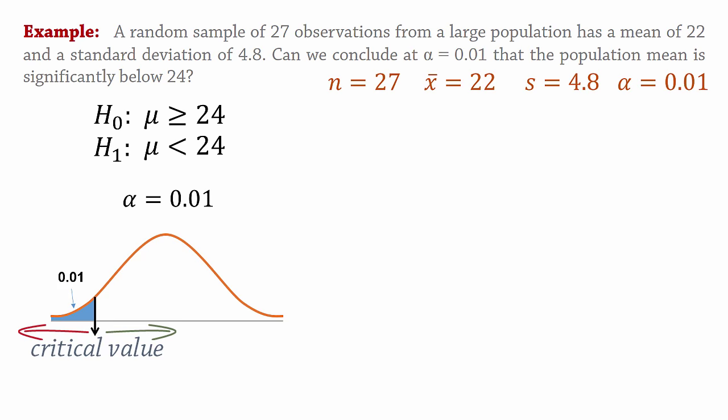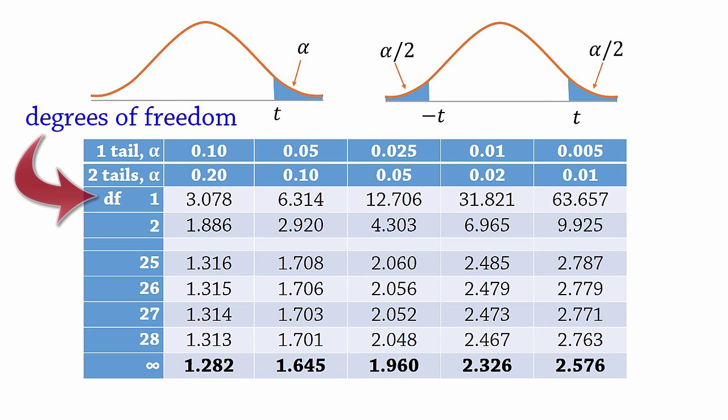Now the t-distribution uses degrees of freedom, df as seen here. The degrees of freedom for a one-sample t-test for mean is n minus 1. Since the sample size in our example is 27, the degrees of freedom will be 27 minus 1, which gives 26.